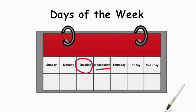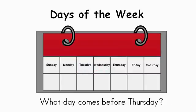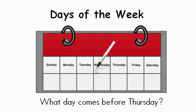So now I'm going to give you some questions, and you're going to have to figure out what the day of the week is. What day comes before Thursday? Use your calendar to help you out. Find Thursday — the day before it is going to be the one right in front of it, to the left of it. That's right, if you said Wednesday, you are correct.